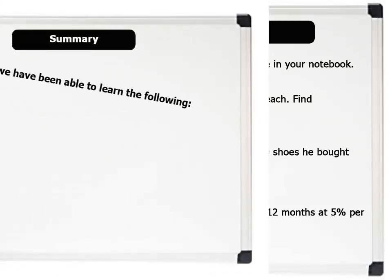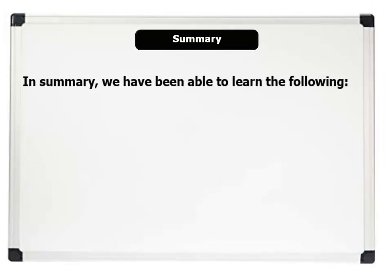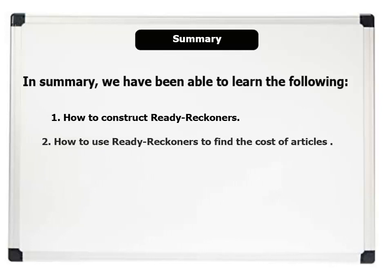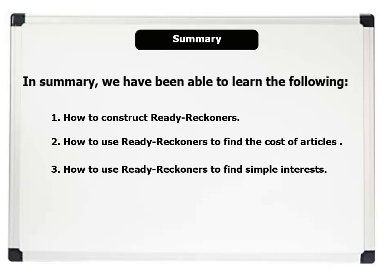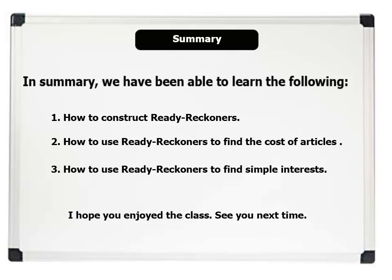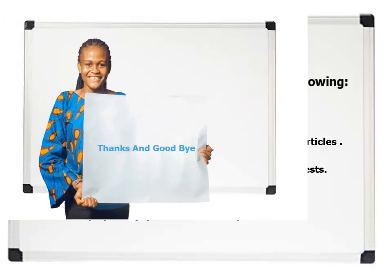In summary, we have been able to learn the following in this lesson: 1. How to construct Ready Reckoners. 2. How to use Ready Reckoners to find the cost of articles. And 3. How to use Ready Reckoners to find simple interests. I hope you enjoyed the class. See you in the next lesson. Thanks and goodbye.